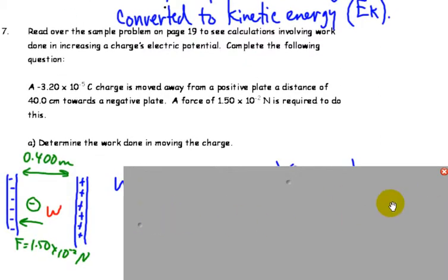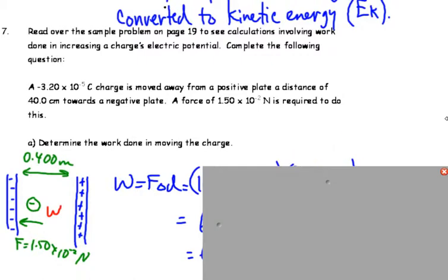For distances, just like previously, they have to be in meters. So, 40 centimeters is 0.400 meters. It's a negative charge this time, and I am exerting a force of 1.50 times 10 to the minus 2 Newtons to move it from one side to the other. And the question is, what's the work?